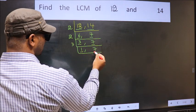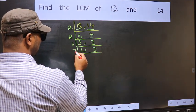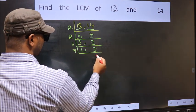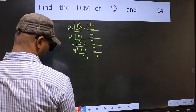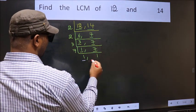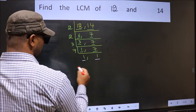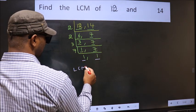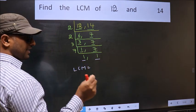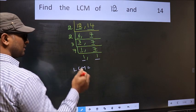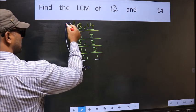So focus on to the other number 7. 7 is a prime number, so 7, 1 is 7. Now we got 1 in both the places. So our LCM is the product of these numbers.